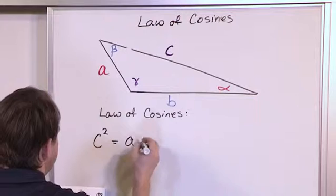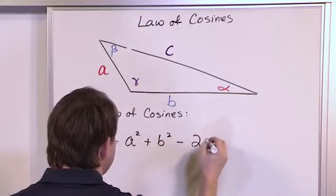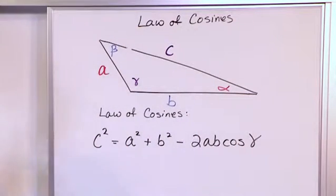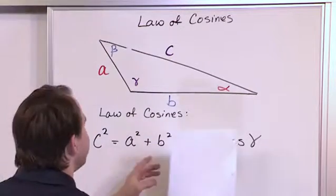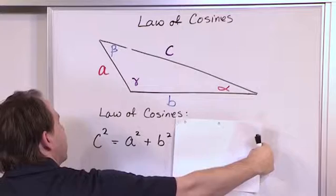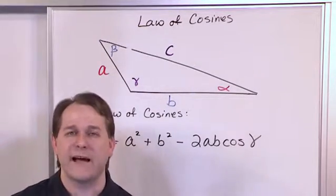c squared is equal to a squared plus b squared minus 2ab cosine gamma. Now let me ask you a question before I say anything else. If I cover up this, does this look familiar? c squared is equal to a squared plus b squared. It should look familiar because that's the Pythagorean theorem.